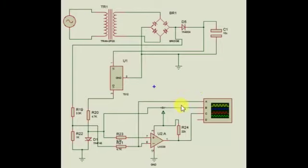This is a step-down transformer and bridge rectifier. Pulsating DC is coming here. Pulsating DC goes to the inverting terminal, and with the help of this capacitor filter, we remove the ripple.